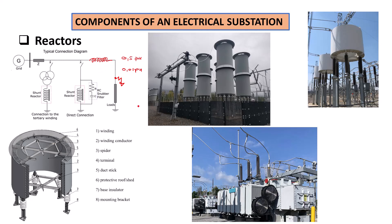That is basically what reactors are able to do to protect your equipment in case of a short circuit. Reactors can be installed in different locations on your system. You can place the reactors in series with your feeder or your load, or you can connect them in parallel as a shunt reactor, and so on. These reactors are really very reliable in limiting your short circuit current and they are very easy to install. Here we've got an example of an echo reactor, which is one of the most commonly used types of reactors.